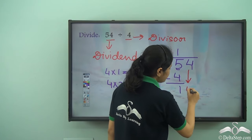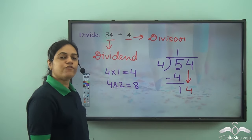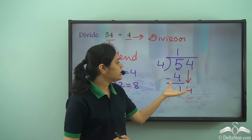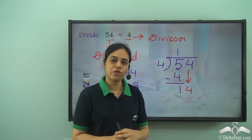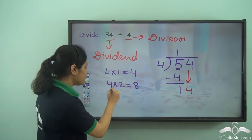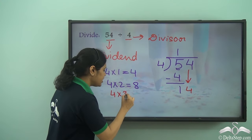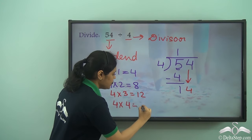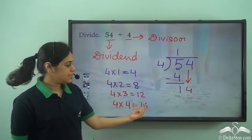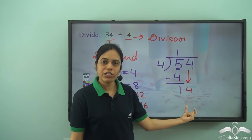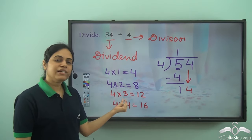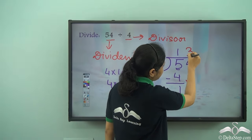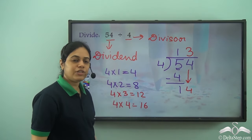Once I bring this 4 down, I get 14. Now, how many times does 4 go into 14? I know 4 into 3 is 12 and 4 into 4 is 16. 16 is greater than 14, so I will take 3. 4 into 3 is 12 and I write 3 just above this 4 of the dividend.